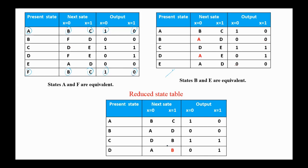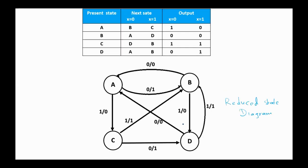If we scan the state table again, we can find that states B and E are equivalent as well. So we can remove state E and replace its occurrence with state B. In this resulting table we have no more equivalent states, so this is the reduced state table. Here we also have the state diagram after reduction.